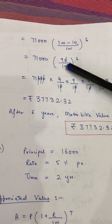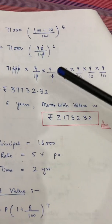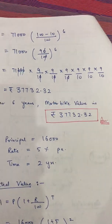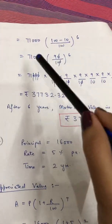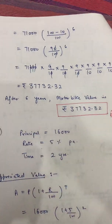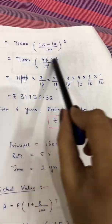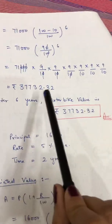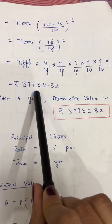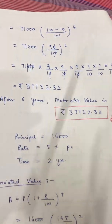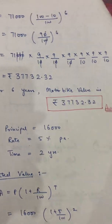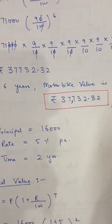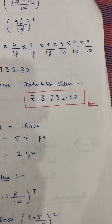Simplify 90/100 to 9/10, then raise it to the power of 6: (9/10)^6. Cancel the zeros, multiply the numerator, then divide. The answer comes out to ₹37,732.32. So after six years, the value of the motorbike is ₹37,732.32.